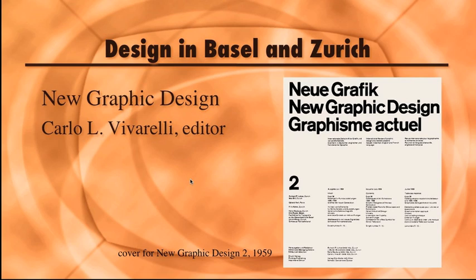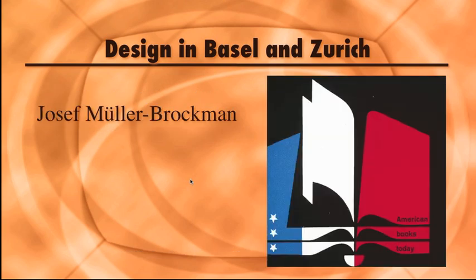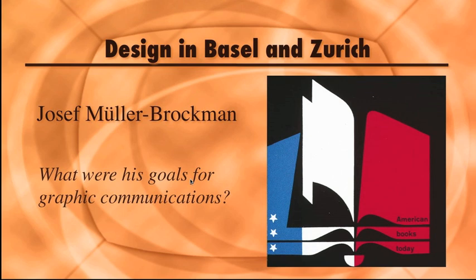Swiss design coalesced into a unified international movement when the journal New Graphic Design began publication in 1959. This trilingual journal presented the philosophy and accomplishments of the Swiss movement to an international audience. Joseph Müller-Brockmann was a leader in the theory of the movement, and his messages are as current today as they were then. This poster for the American Books Today catalog shows a very clear message using shapes to signify books and colors to signify the country of their origin. Do some research and tell me what were his goals for good graphic communication.